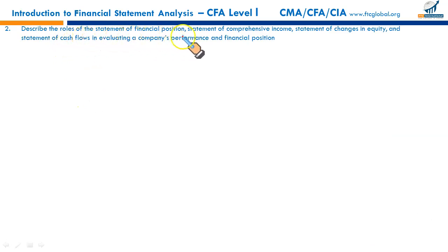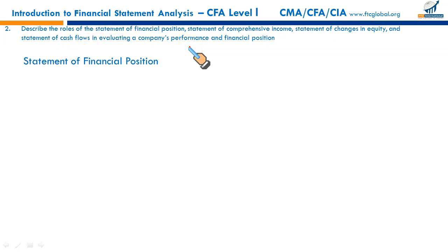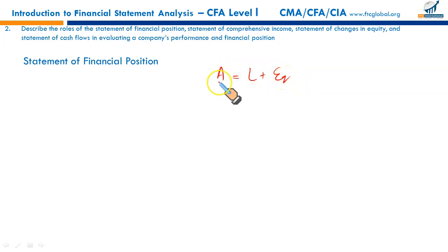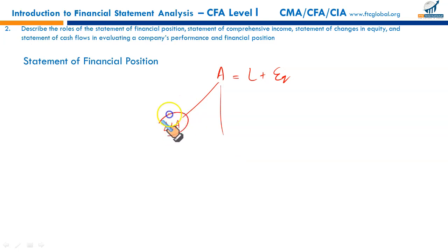The next LOS: describe the role of the statement of financial position — also called the balance sheet — in evaluating a company's performance and financial position. It is a statement at a particular point in time that shows the company's assets, liabilities, and equity. Assets are the resources controlled by the firm, not necessarily owned. Under US GAAP the term used is long-lived assets; the rest of the world uses non-current assets. Assets are segregated into long-lived assets and current assets.